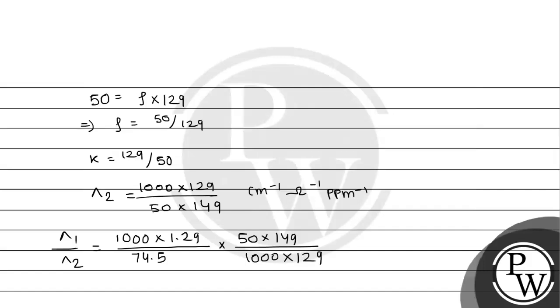So after canceling out, if you cancel the terms like this, then you will get 149 divided by 74.5 multiplied by 50 divided by 100, which equals 1.